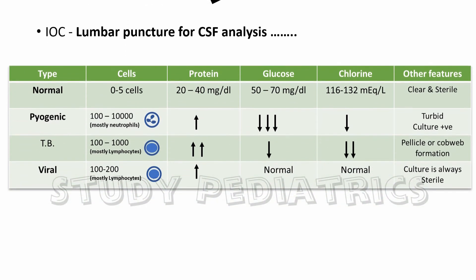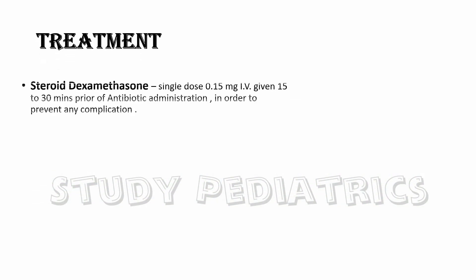Treatment includes steroid dexamethasone injection as a single dose of 0.15 mg/kg IV, given 15 to 30 minutes prior to antibiotic administration in order to prevent complications. As you know, massive injury is caused not only by the pathogen but also by the immune response; hence it is important to suppress this response so as to prevent brain tissue damage.